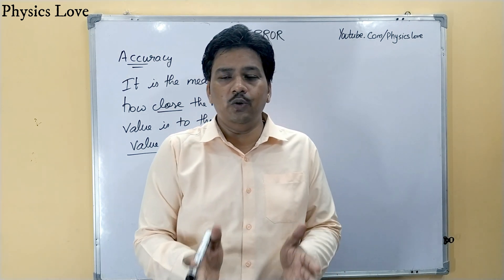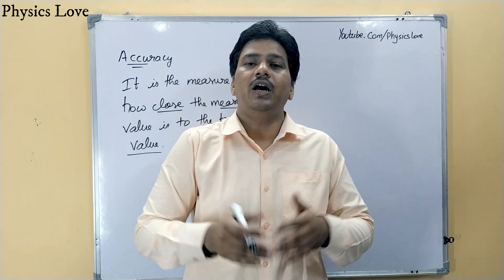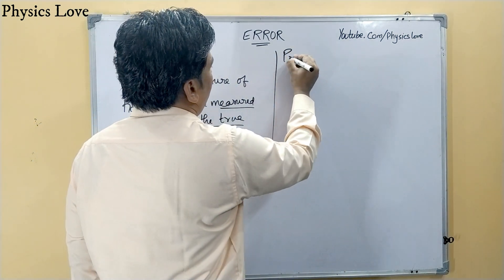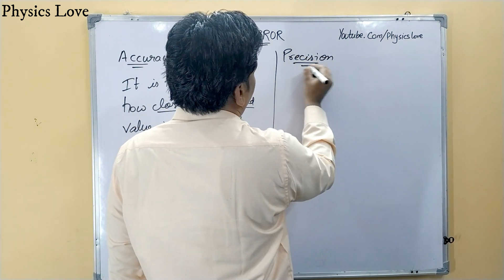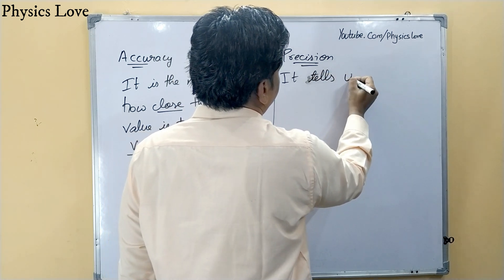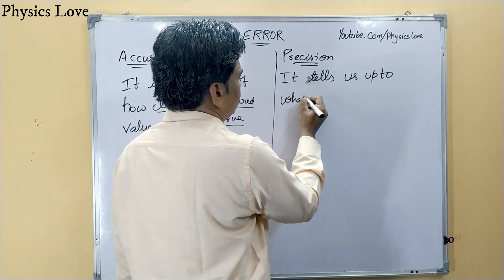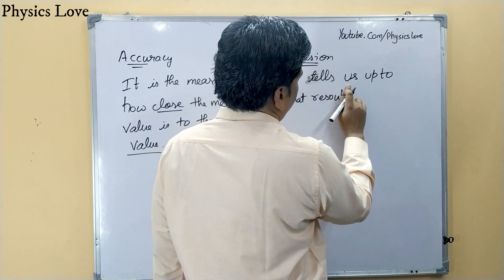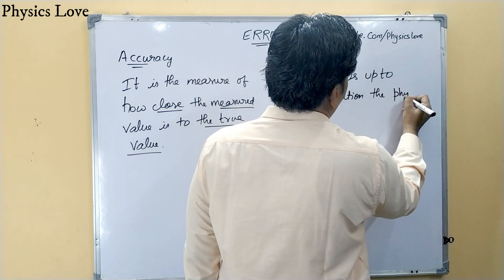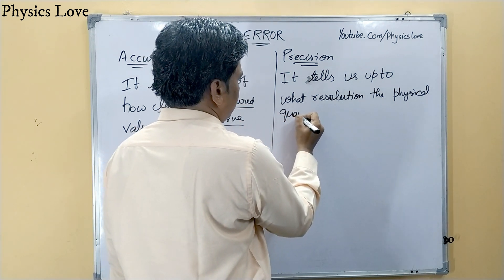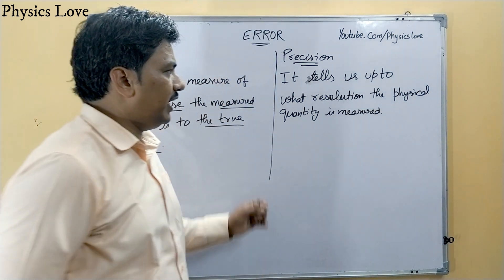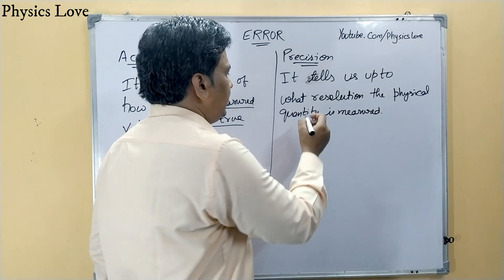Lesser the difference between the true value and the measured value, more will be the accuracy of the measured value. Now the next term is precision. Precision tells us up to what resolution the physical quantity is measured.